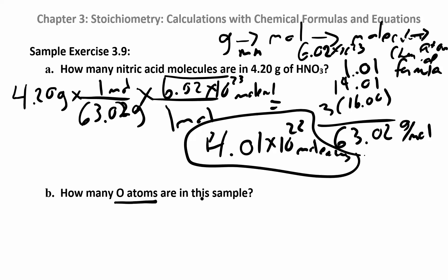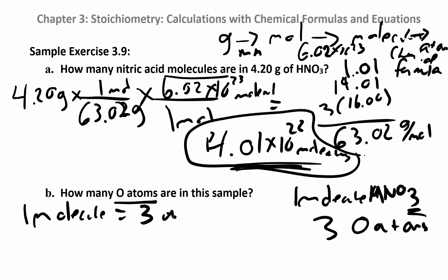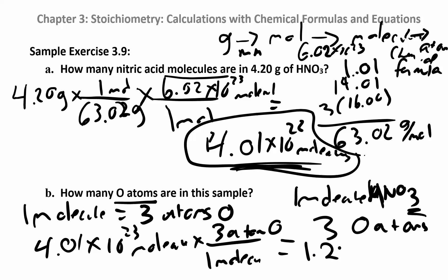They want to know how many atoms of oxygen are in the sample. We know how many molecules we have. For every one molecule of HNO3, we have three oxygen atoms. If we wanted to get to nitrogen, it would be one. If we wanted to get to hydrogen, it would be one. But oxygen, we have three. All we have to do is take those molecules that we calculated in part A, 4.01 times 10 to the 22 molecules. For every one molecule of HNO3, I have three atoms of oxygen. You multiply that through and you end up with 1.20 times 10 to the 23 atoms of oxygen.